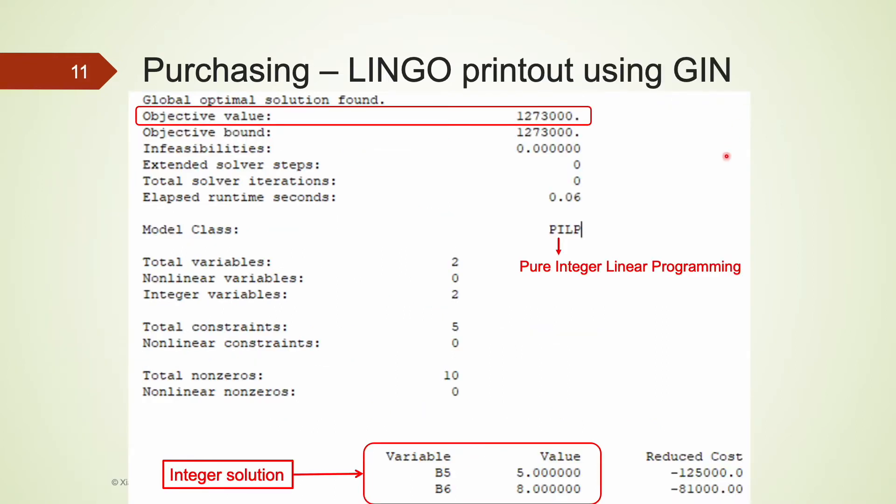After declaring B5 and B6 as integers, here is the optimal solution we obtained. We should purchase 5 757 jets and 8 767 jets, resulting in a maximum of 1,273,000 passenger-carrying capacity every year. This time, all constraints are satisfied. You may also notice that, this time, the model class is no longer LP. Instead, it is PILP, which stands for Pure Integer Linear Programming, as we have declared all the decision variables B5 and B6 being binary.